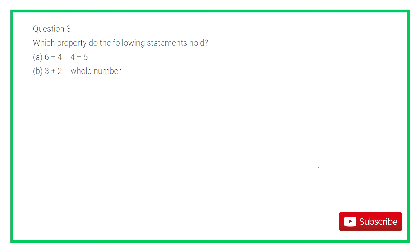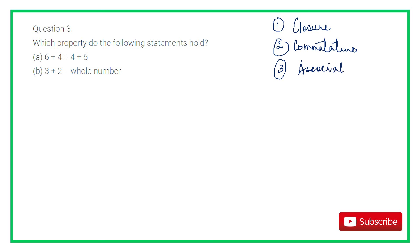Which property do the following statements hold? In order to do this question, first we should know which properties exist. The first property is closure property, second is commutative property, third is associative property, and fourth is distributive property. Always remember: whichever property holds true for addition will hold true for multiplication, because multiplication is repeated addition. And if any property does not hold true for subtraction, it will not hold true for division either, because division is repeated subtraction.